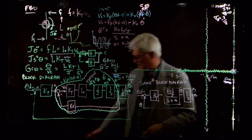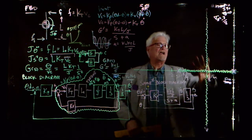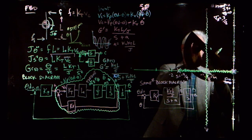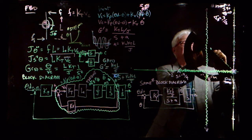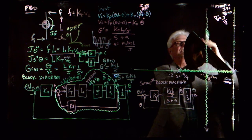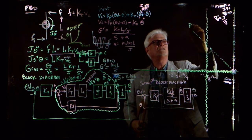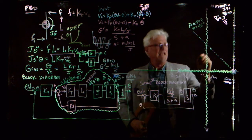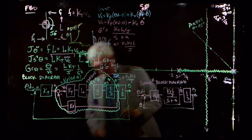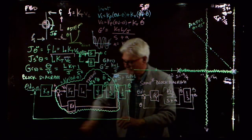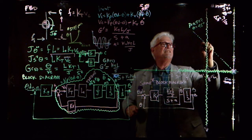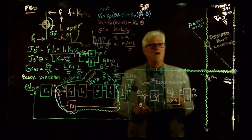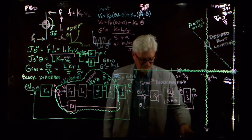Somebody might say, I don't know where on this root locus is a good place to put the roots. I'm going to draw a 45-degree line. If you remember, cosine(theta) equals zeta, so this is at zeta equals 0.707 — that's the damping ratio, theta is 45 degrees. For this system, this would be a good spot — the desired root locations.